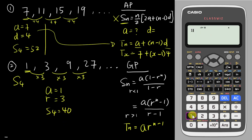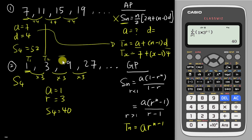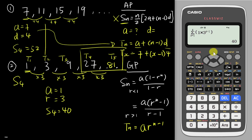You can verify this manually: 1 plus 3 plus 9 plus 27 equals 40. The great advantage of the sigma formula is flexibility with partial sums. For example, if you have t1, t2, t3, t4, t5 and the next term is 81 (multiplied by 3), and you only want to sum the fourth and fifth terms, just change the sigma range to start at 4 and end at 5. The calculator gives 108, and indeed 27 plus 81 equals 108.